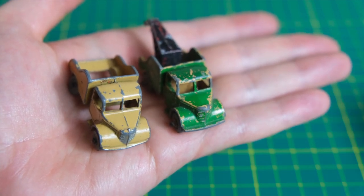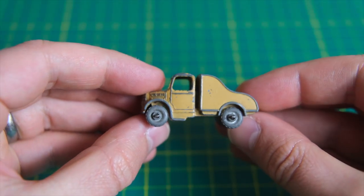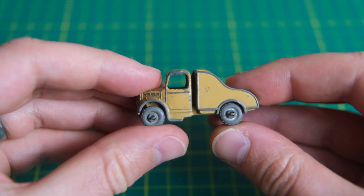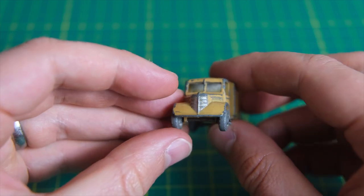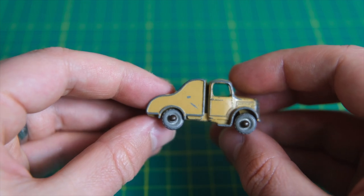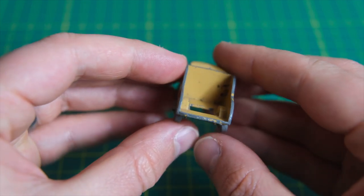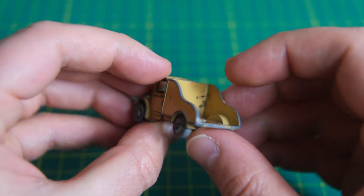Hello and welcome to another episode of Diecast Restos. My name is Jason and these are the 13A and 13B Wreck Trucks. This 13A model was introduced in 1955 before it was replaced by the slightly modified and elongated 13B wreck truck in 1958.